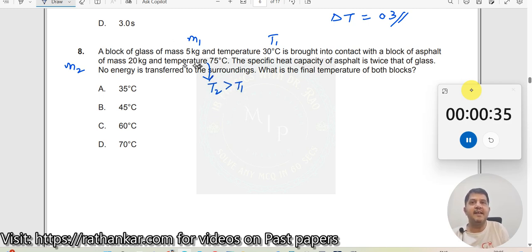Which means who will lose heat? This asphalt will lose heat as compared to the block, so asphalt will give energy to the block, to the glass. Glass will get heated up. The specific heat capacity of asphalt, M2, C2, C2 is twice that of glass, 2 times C1.